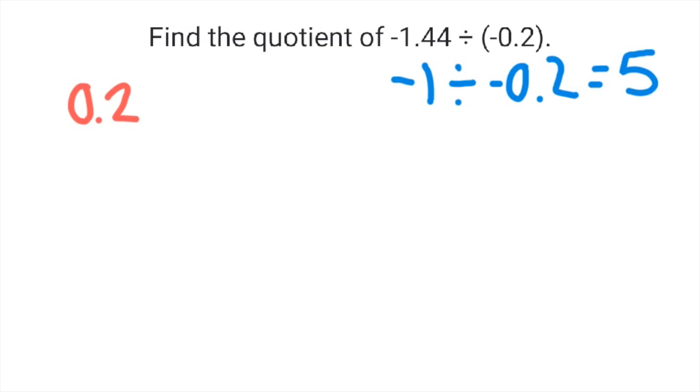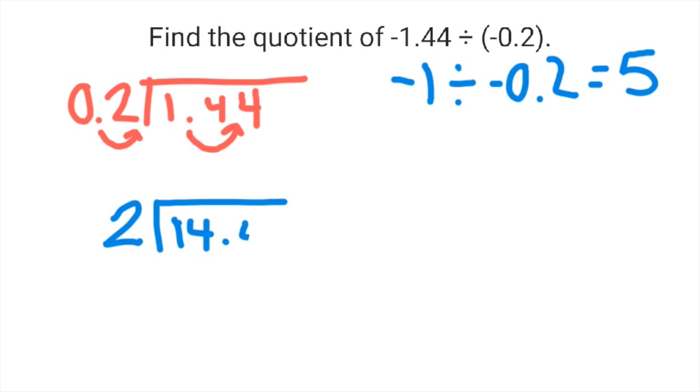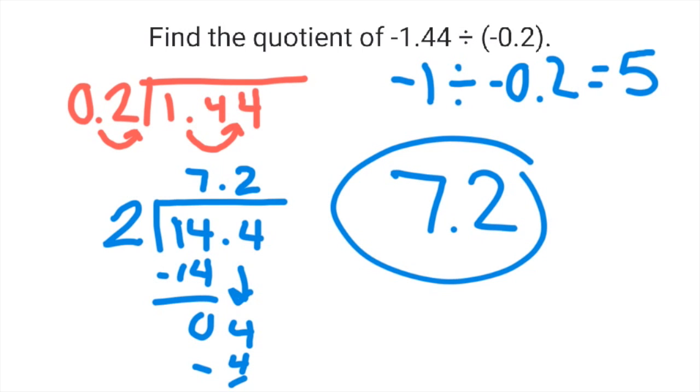Our real answer should be close to that. Let's divide the original problem. We have 0.2 goes into 1.44. We don't typically have a divisor with a decimal in it, so we move it over one time to turn it into 2 whole. We have to do the same thing to the 1.44, so we're really dividing 2 into 14.4. 2 goes into 14 seven times, and 2 goes into 0.4 two times. We bring our decimal straight up. We find our answer is 7.2. The answer is positive, just like our estimate.